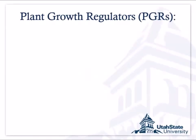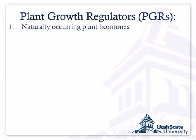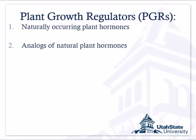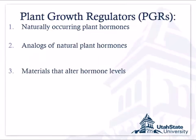Plant growth regulators are things we use to manage fruit trees. Some of them are the hormones that the plant makes — we've got them in large quantities, mix them in a spray tank, and put them on the leaves to get a response by blasting the plant with its own hormones. Another type is an analog of a natural plant hormone — chemically very similar but not the exact same thing. When it gets in the plant it acts a lot like a hormone, but it's not the exact same molecule. There are also materials that alter the natural hormone levels in the plant.